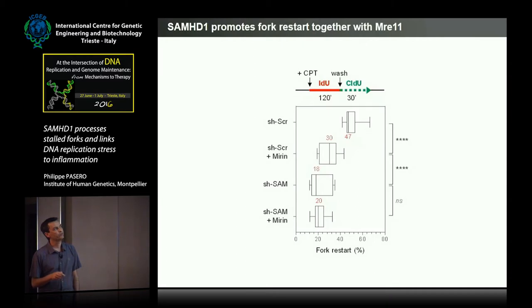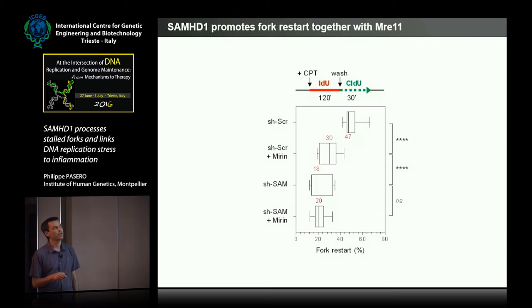Finally, we measured fork restart after CPT treatment — the fraction of cells that can reactivate CPT-arrested forks after washout. We found that in conditions where 50% of forks restart within 30 minutes after drug removal, there is a strong reduction of fork restart in the absence of SAMHD1. This is epistatic to MRE11, because if we inactivate MRE11 with mirin, we have no additive effect of depleting both activities.